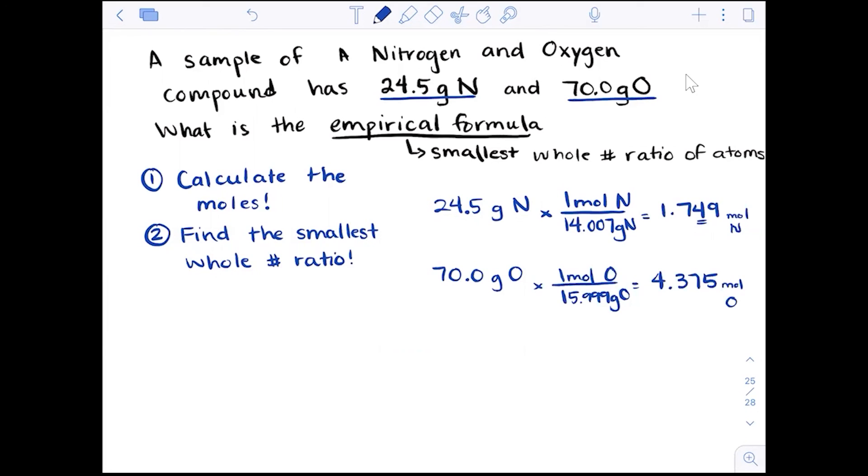We don't want to say 1.7 is 2 and 4.3 is 4. That's not what it is. So to find the smallest whole number ratio, what we actually want to do is imagine that these are subscripts. 4.375 under oxygen, 1.749 under nitrogen. And we're going to divide by the smallest.